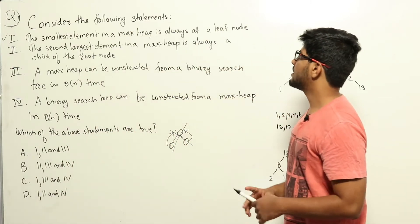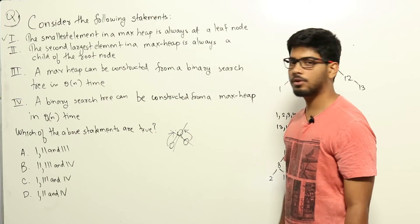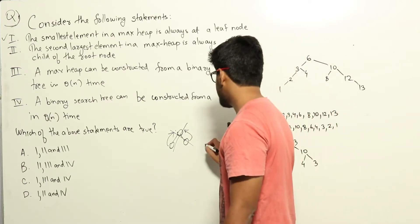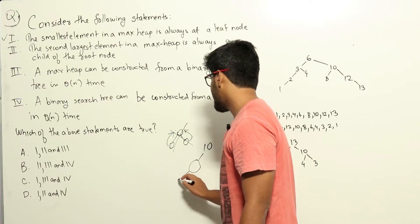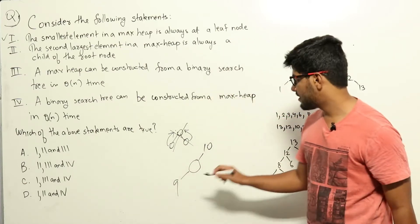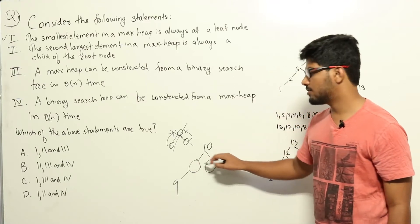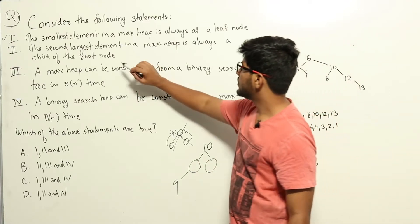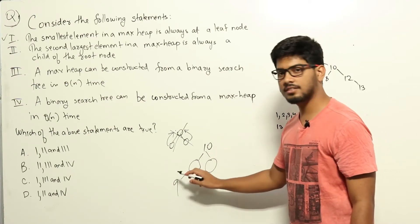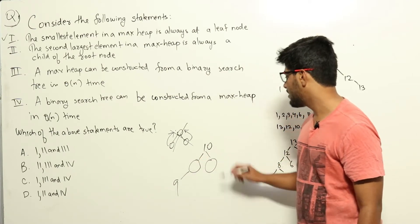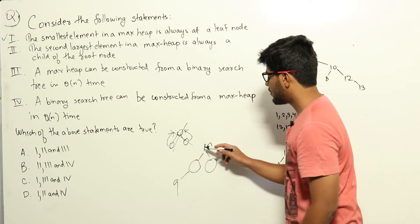Statement 2: the second largest element in a max heap is always a child of the root node. Let's say the largest element is 10 and the second largest element is 9. Suppose 9 doesn't belong to either of the two children of the root node 10.